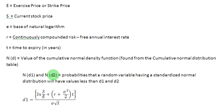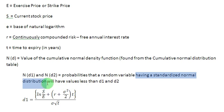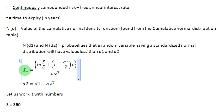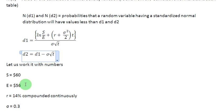N of D1 and N of D2 are probabilities. We are talking about random variables here — for example, stock price is a random variable. What we are interested in finding out is the probabilities that a random variable like a stock price variable, having a normal standardized distribution, will have values less than D1 and then D2. In order to find out those probabilities, we need to first establish the values of D1 and D2, for which we have these two formulas.